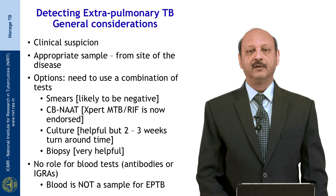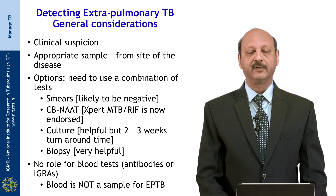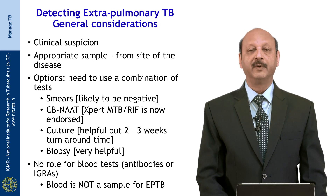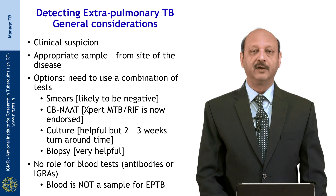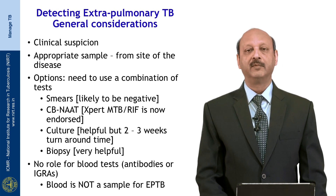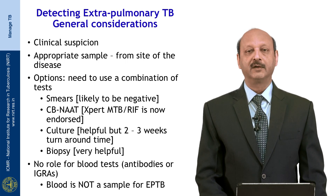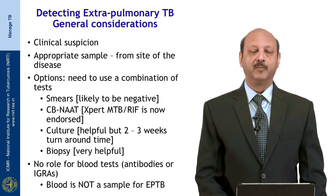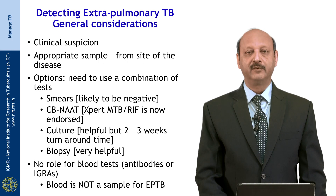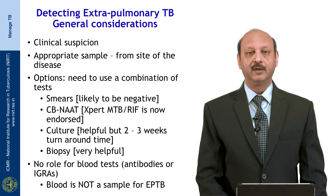Whenever we think of extra pulmonary tuberculosis, the diagnosis is always a challenge. First, we look for the clinical symptoms which will depend on the site of involvement — like for pleural tuberculosis we may have chest pain and dyspnea, for sinus tuberculosis the patient may have headache and vomitings, and for bone tuberculosis they may have local pains in the bones or the joint. Accordingly, we suspect extra pulmonary tuberculosis and then the next step is to obtain an appropriate specimen from the site of the disease.